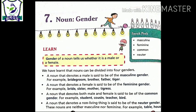Next is feminine gender. A noun that denotes a female is said to be feminine gender. Feminine gender is a gender that denotes a female - nouns which denote females. For example: bride, sister, mother, tigress.